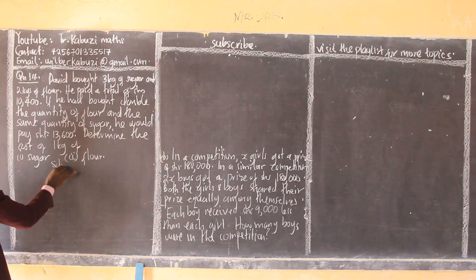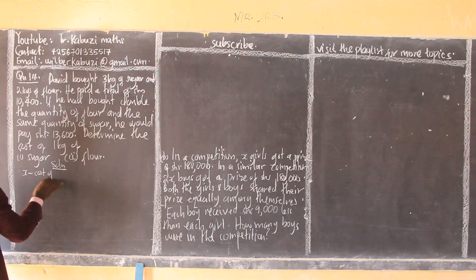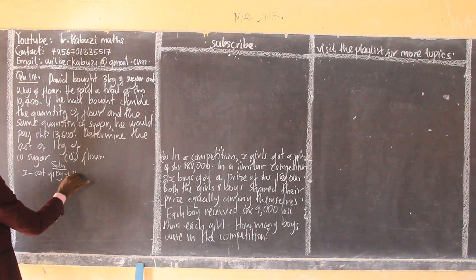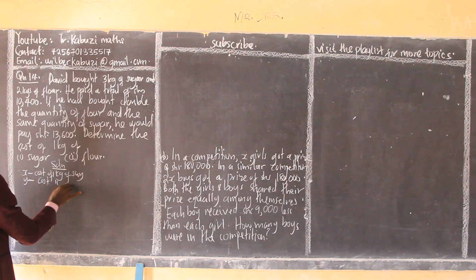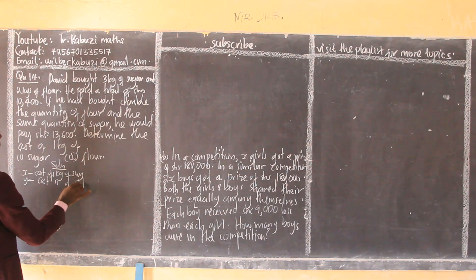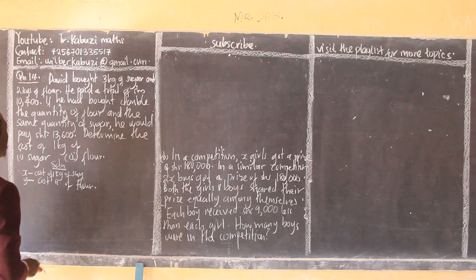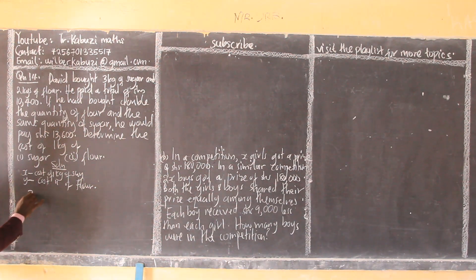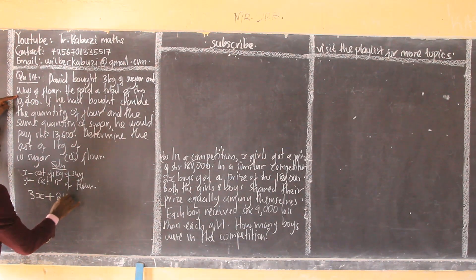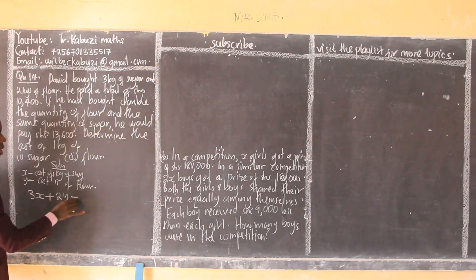I'll start by letting x be the cost of one kilogram of sugar and y be the cost of one kilogram of flour. He bought three kilograms of sugar, so three x, plus two kilograms of flour, so two y, because each kilogram costs y.